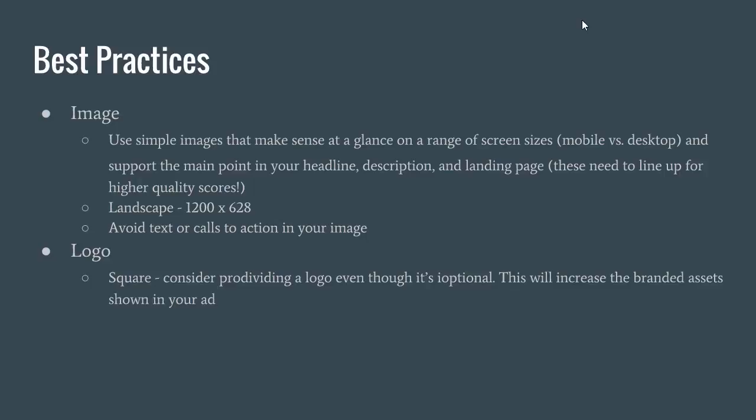Your headline, description, and landing page need to line up — the ad copy and even the images between those need to align to get high quality scores. If you have different keywords in your ad than on your landing page, that generally lowers quality scores overall. For image sizes, they recommend 1200 by 628 — just for resolution purposes. The last thing: avoid text or calls to action in your image. It's actually the opposite of what they used to recommend, but now they're including the call to action separately from the image. They want just an image, no text — the text is filled out in other fields.